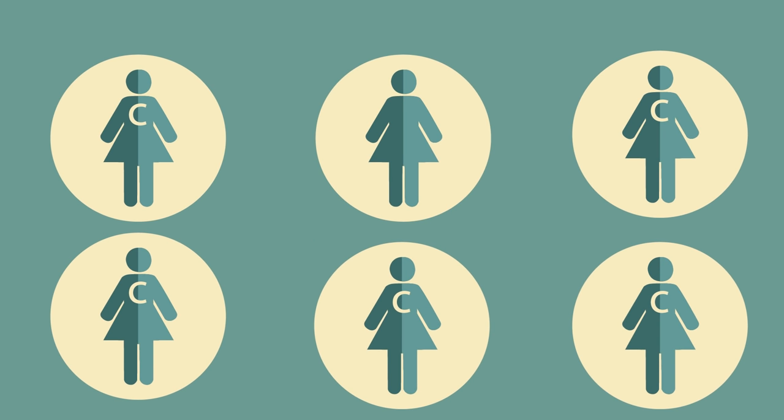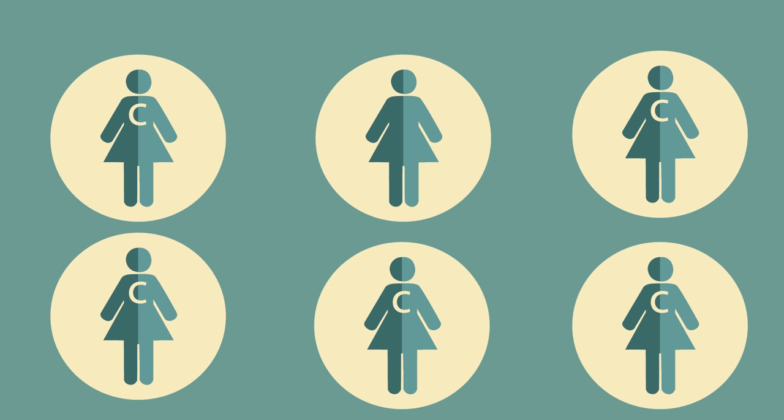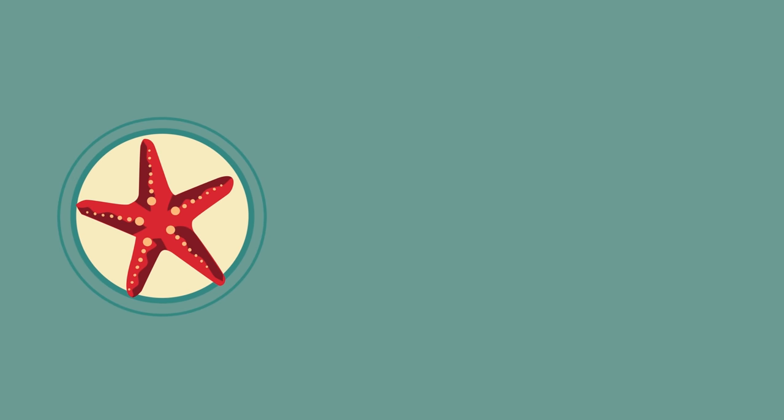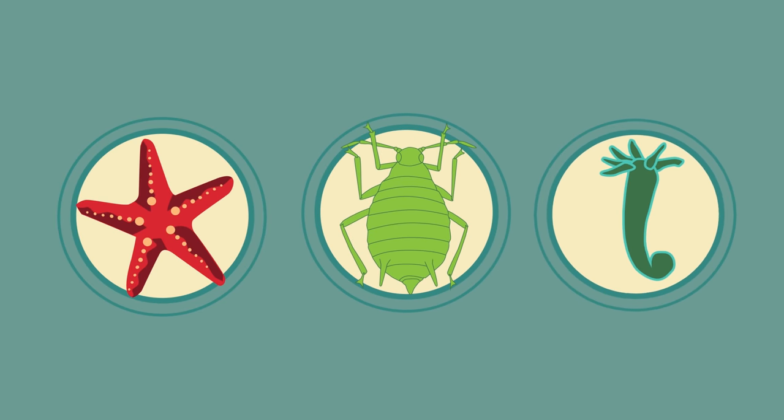So there we have asexual reproduction. It only requires one parent, meaning populations can grow very quickly and everyone is a clone of one another. It is more commonly seen in plants and bacteria, but can also occur in simple animals like starfish, aphids, and hydra.